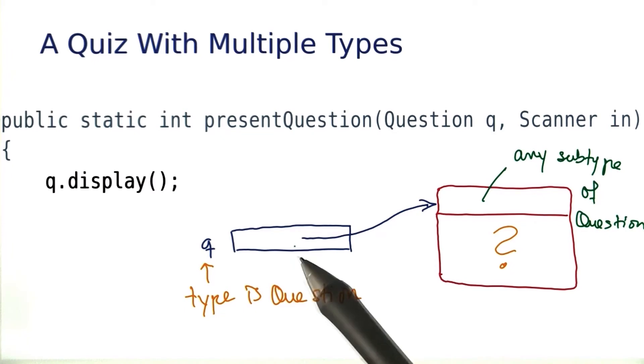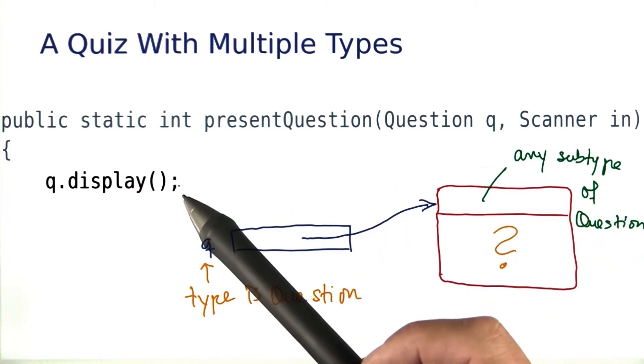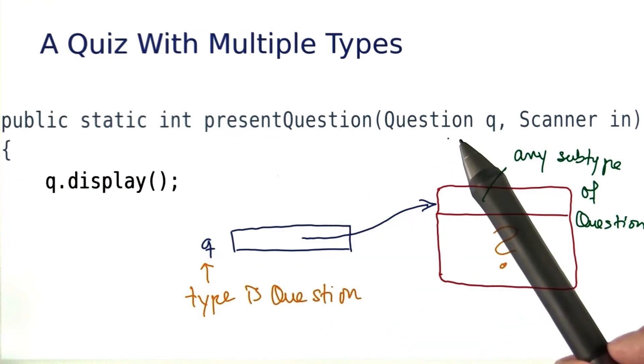Now, the good thing is that when the program runs, it does the right thing. At runtime, it's determined what the exact type of this object is, and its display method is called. That might be Question.display, ChoiceQuestion.display, or the display method of some other class that also extends the Question class.